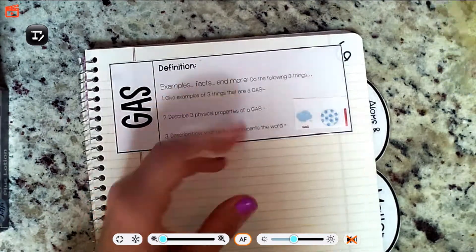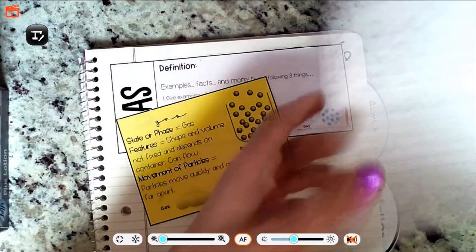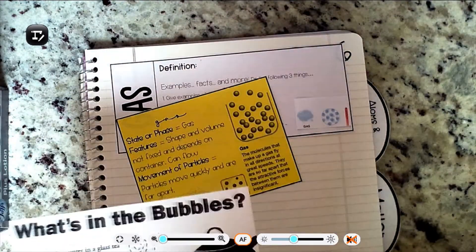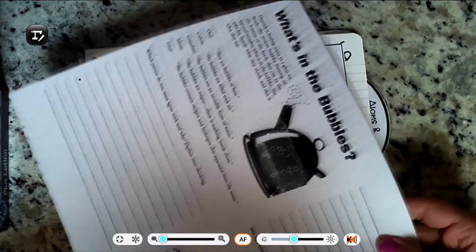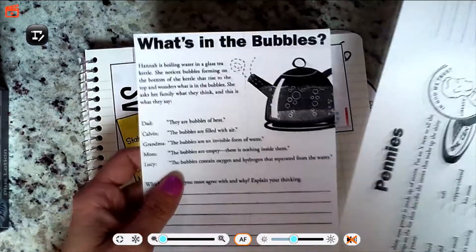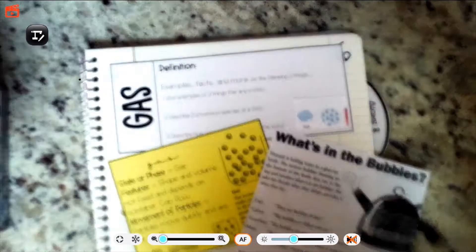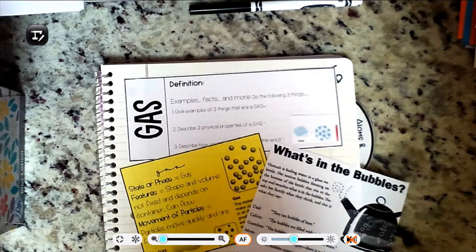You're going to need the yellow gas card and then part of a two-page procedure, the thing about what is in the bubbles. You need the what is bubbles half. If you want to take a minute, pause the video and get those cut out.